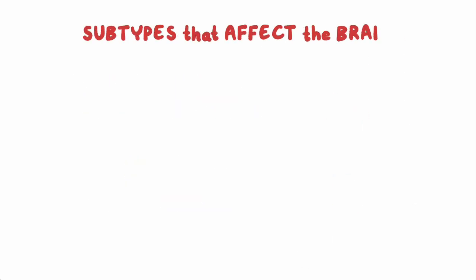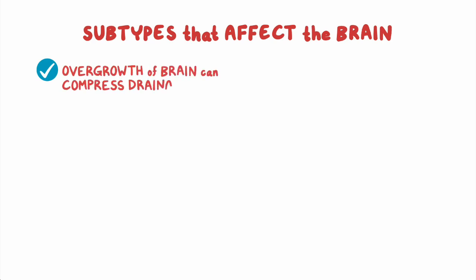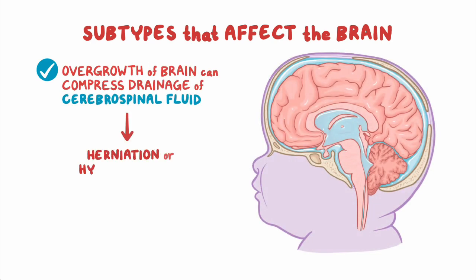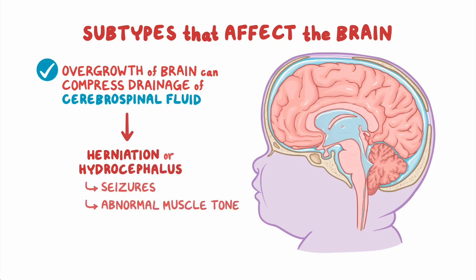Some subtypes of PROS affect the brain. Overgrowth of the brain can compress the drainage of the cerebrospinal fluid, resulting in herniation or hydrocephalus, which in turn can cause seizures, abnormal muscle tone, and various cognitive and behavioral disabilities.